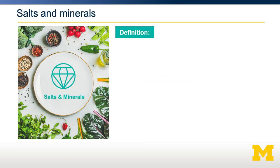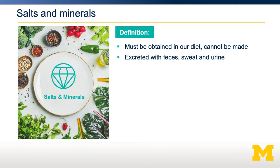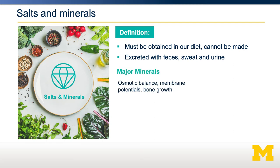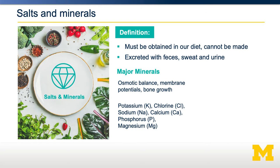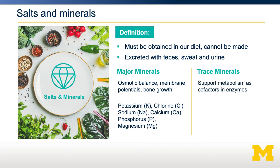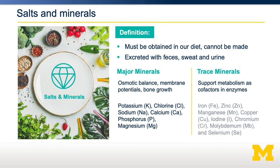Next are salts and minerals. These are single atoms that our bodies cannot make. They can be excreted through sweat, feces, and urine, and as they're excreted, we need to obtain them from our diet. Salts and minerals can be classified into two groups. The major minerals — including calcium, sodium, and potassium — are important for osmotic balance, membrane potentials, and bone growth, and are required in quite large amounts. The second group are trace minerals, which generally support metabolism by acting as cofactors to help the function of enzymes. This includes iron, zinc, molybdenum, and selenium, which are required in much lower levels than the major minerals.